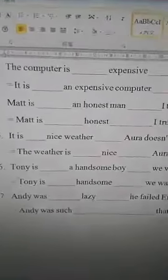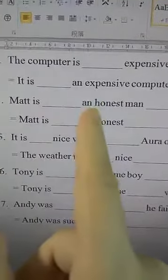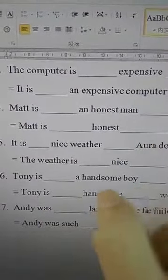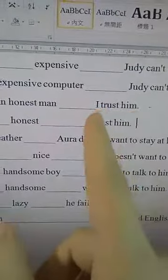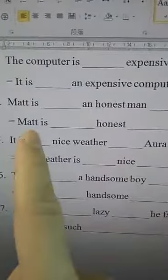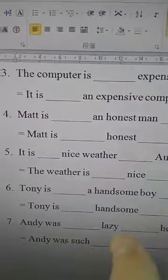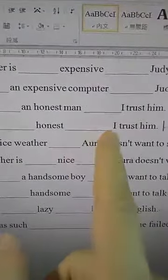Number four: 'Matt is ___ an honest man ___ I trust him.' It's a noun, so the answer is 'such': 'Matt is such an honest man that I trust him.' And: 'Matt is ___ honest ___ I trust him.' We don't need to see the rest — 'honest' is an adjective, so the answer is 'so': 'Matt is so honest that I trust him.'